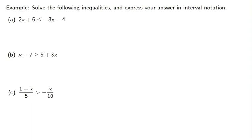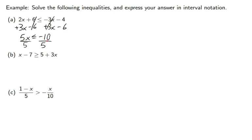Let's jump right into an example. I'll start out by adding 3x to both sides — you're welcome to add an expression to both sides — and I'm going to subtract 6 from both sides at the same time. I get 5x is less than or equal to negative 10, so I divide by 5. Since that's a positive number, the inequality won't change. I get x is less than or equal to negative 2. In interval notation, that means negative infinity to negative 2 with a bracket, because this is less than or equal to, not just less than.